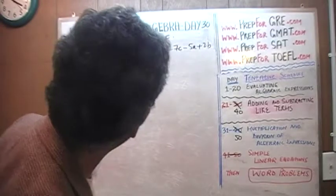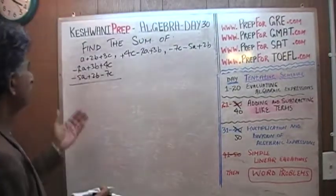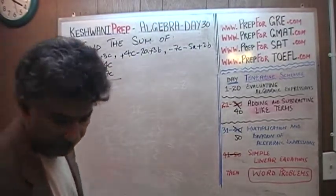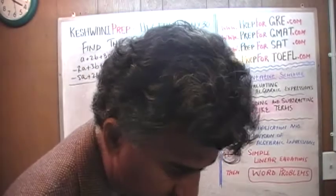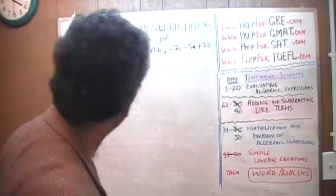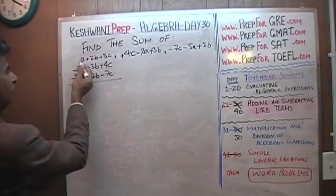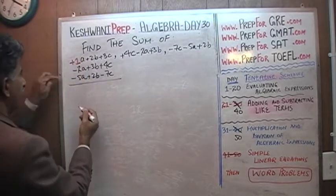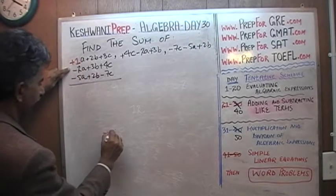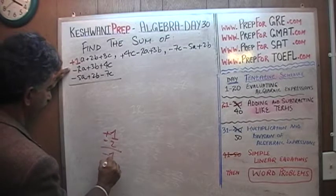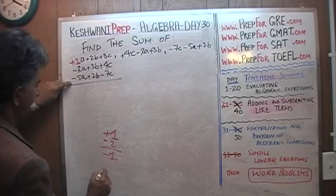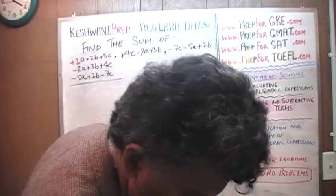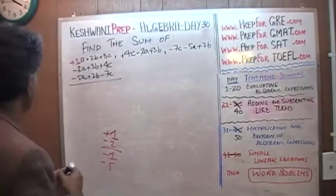The first thing you have to do is line up all the like terms, and once they are lined up it's very simple and straightforward — we simply have to add them up. There are no exponents, so it's 1. Positive 1 and negative 2 is negative 1, and then negative 5, so we get negative 6a.